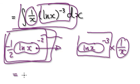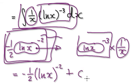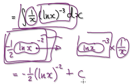Overall, the answer would be negative a half, then bracket natural log of x to the power of minus two, plus c.